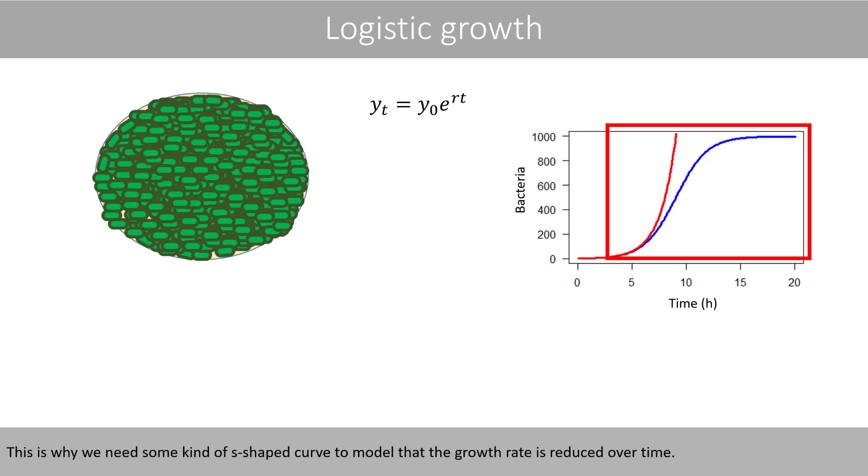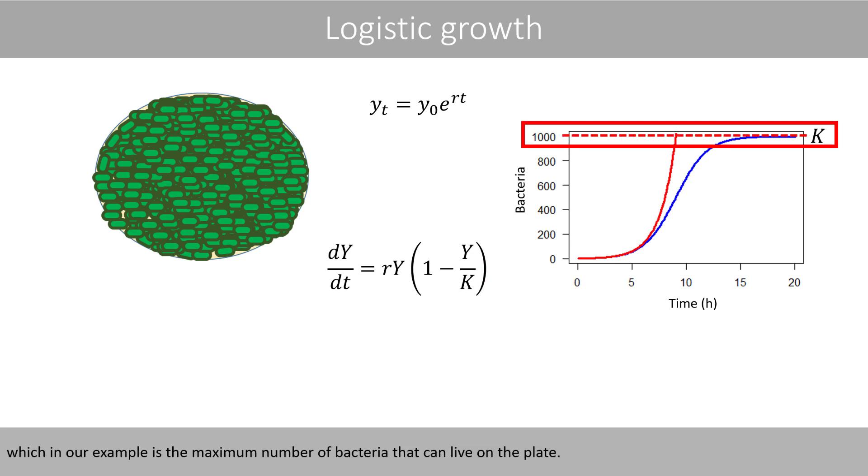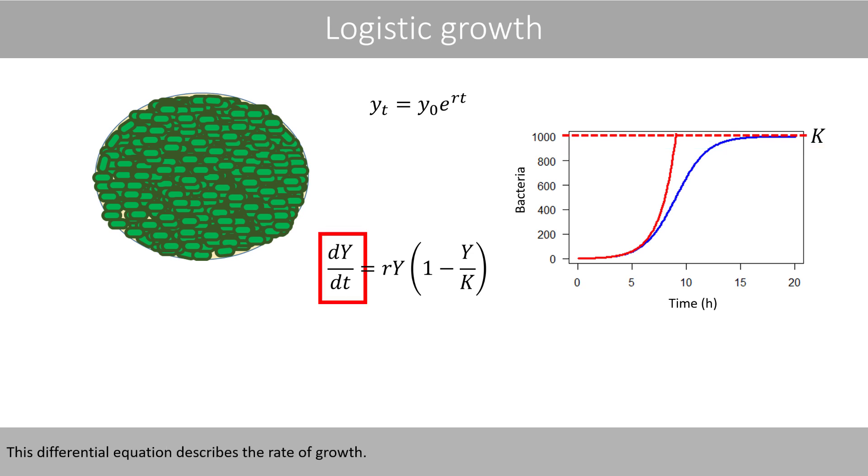This is why we need some kind of S-shaped curve to model that the growth rate is reduced over time. The following differential equation can be used to model such type of growth, where y is the number of bacteria, r is the exponential growth rate, and K is the so-called carrying capacity, which in our example is the maximum number of bacteria that can live on the plate. This differential equation describes the rate of growth.